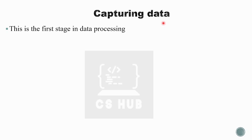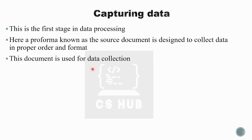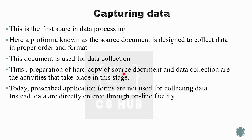This is the first stage in data processing. Here a form known as a source document is designed to collect data in proper order and format. Source document is used for data collection. Preparation of a hard copy of the source document and data collection are the activities that take place in this stage.